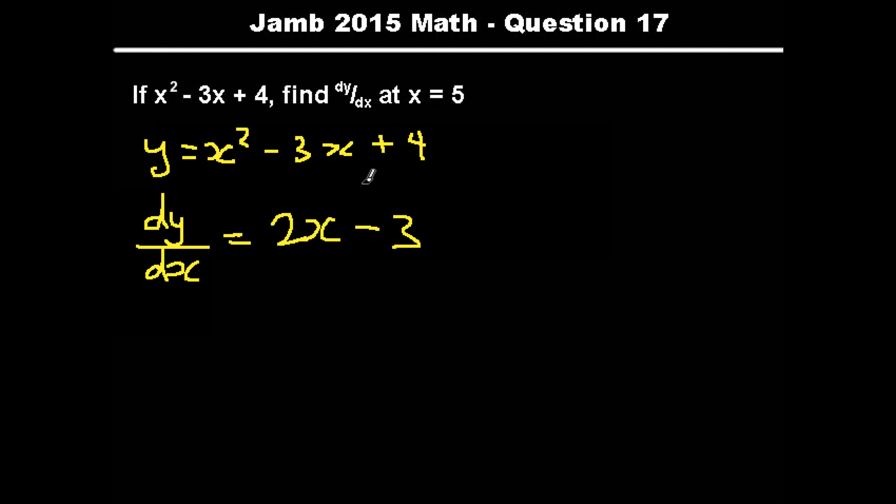Now we're asked to find dy/dx when x is equal to 5. To find the answer to that question, you would just substitute 5 wherever you see x. So dy/dx when x equals 5 is the same as 2 times 5 minus 3, which is equal to 10 minus 3, or 7.